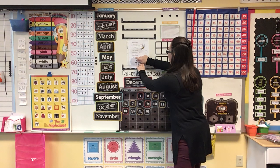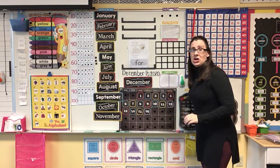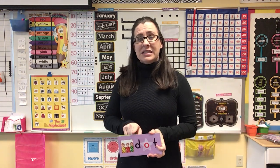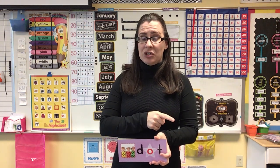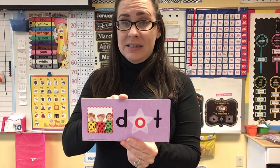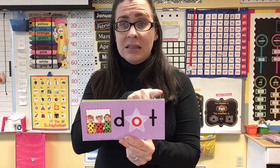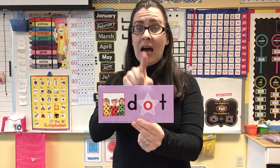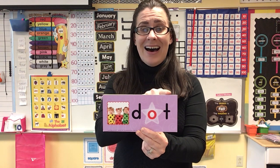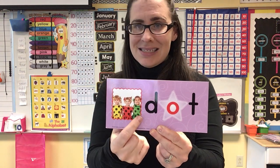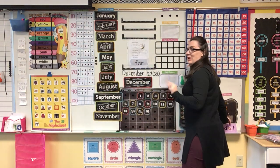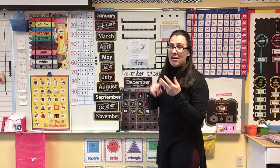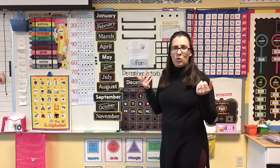We've got a couple more things to do today for calendar. The next thing I want to do is talk about this CVC word that's here. Let's go ahead and make all three sounds, and then put the sounds together to read the word. D-A-T, dot. Do that one more time: D-A-T, dot. Do you see the dots all over their clothes? Remember, CVC words always have three sounds — a consonant, a vowel, and a consonant — just like we saw in our word 'dot.'